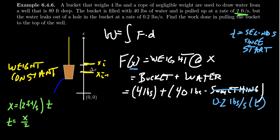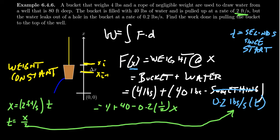The distance that we travel divided by 2 gives us the time. And so if we plug that in here, we end up with 4 plus 40 minus 0.2 times one half times x, like so. Which, of course, will give us a 0.1.